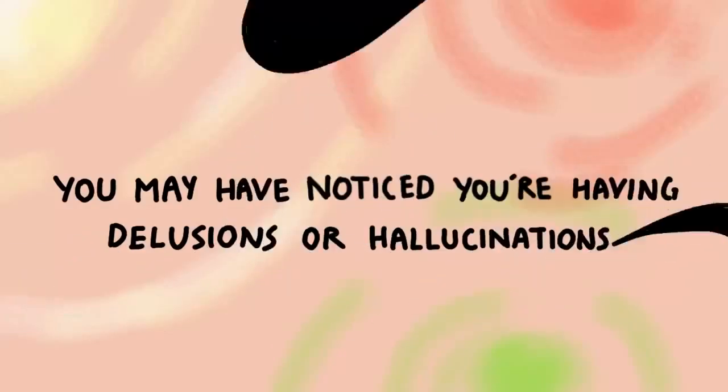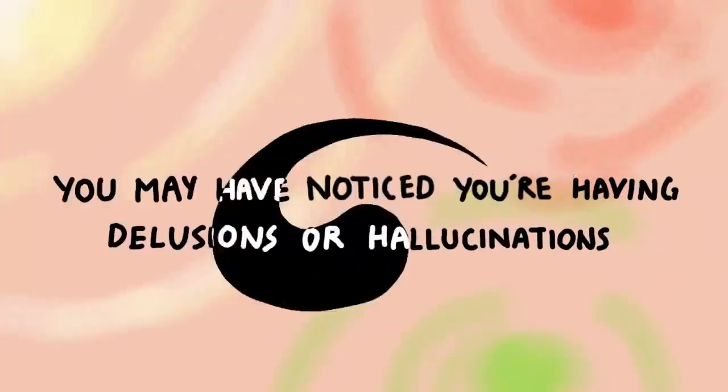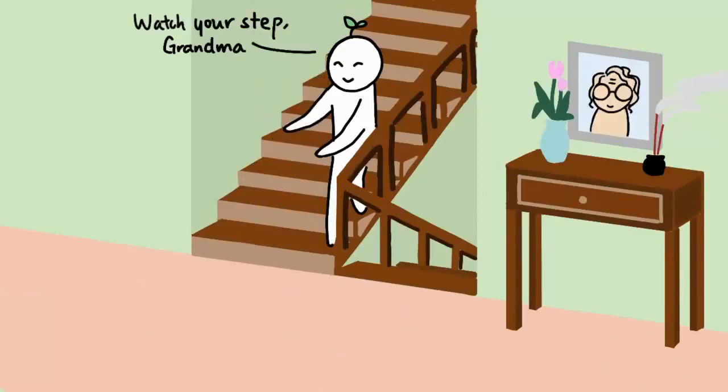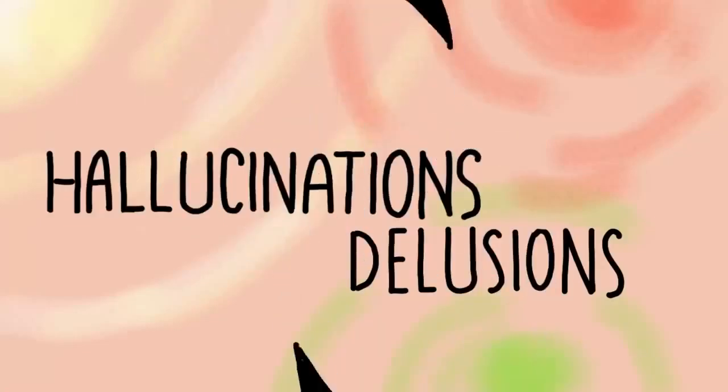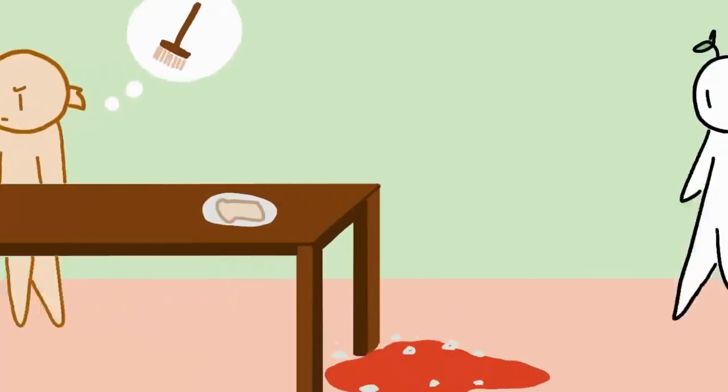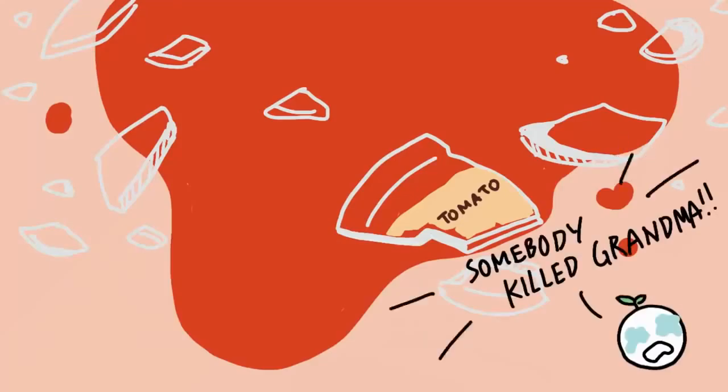Number five: You may have noticed you're having delusions or hallucinations. Kumari and others describe the two aspects of psychosis, hallucinations and delusions, as a sense of perception or belief that creates a lot of urgency in the person experiencing it, despite evidence the perception or belief isn't real.